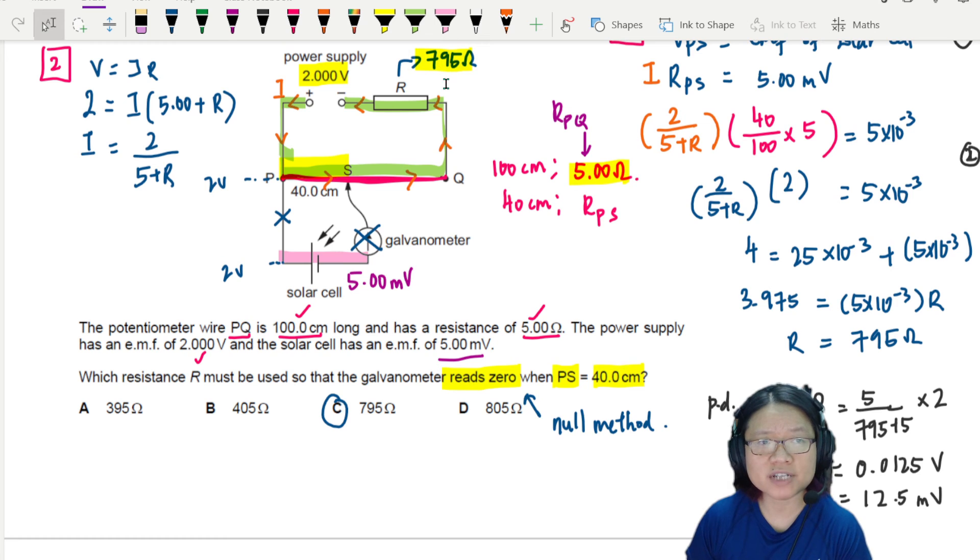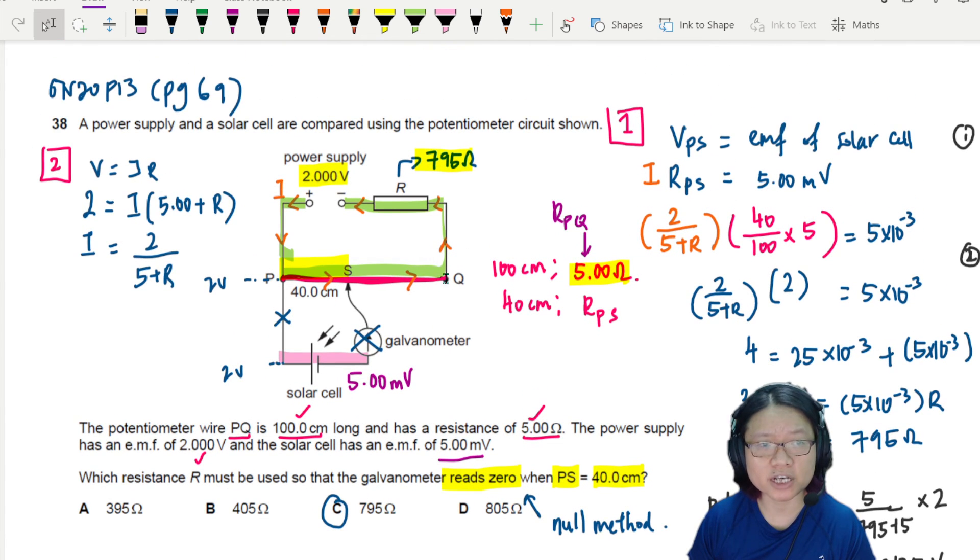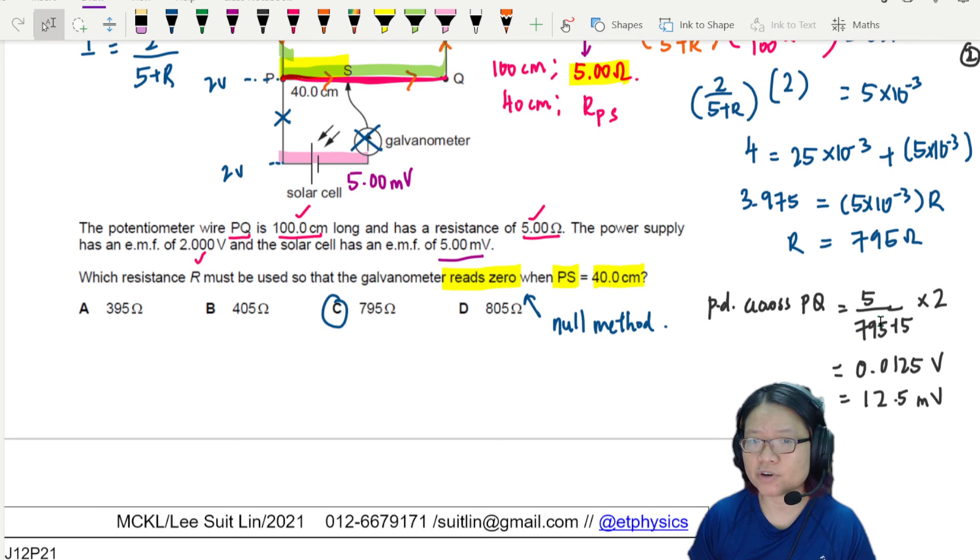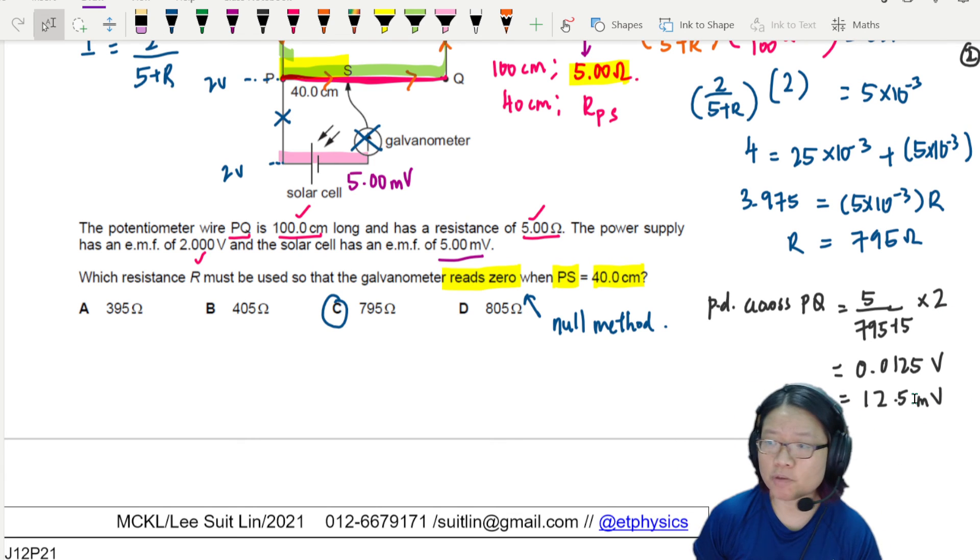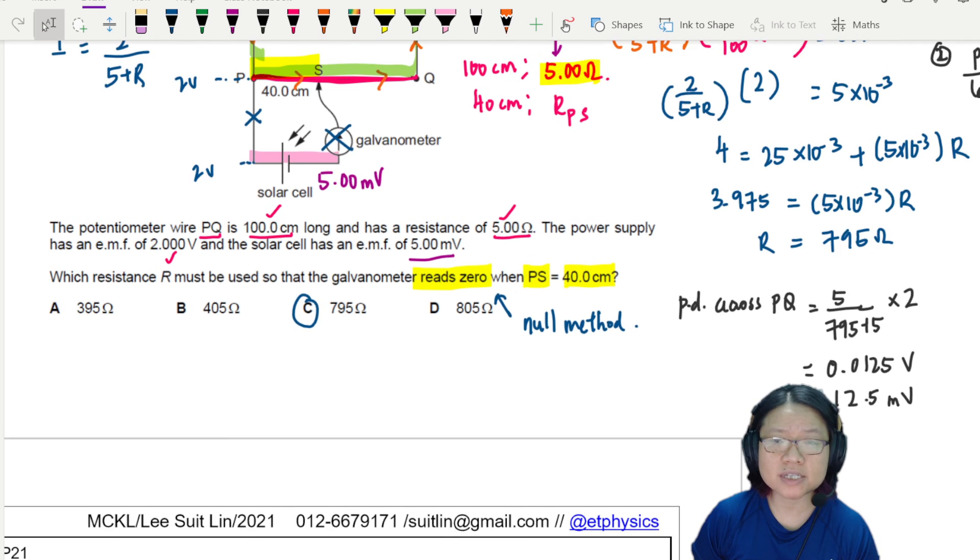The reason why we have such a large difference between resistance is because we want to make the wire, the potential per unit length of the wire very small. So we get more precise reading. And why do we need such precision? Because the solar cell is only 5 millivolts. It's 0.005, very little. So in this case, if I double check and find the potential difference across PQ, since PQ is sharing the potential with R, I will take 5 over 795 plus 5, which is the resistance of PQ, times 2. They're sharing the 2 volts. And I'll get 12.5 millivolts or 0.0125. This increases the precision.